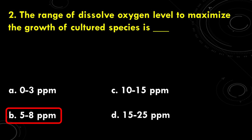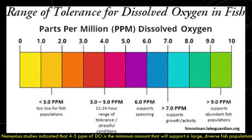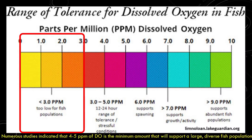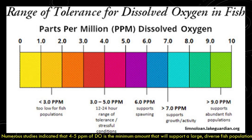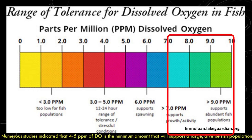This graph shows the range of dissolved oxygen tolerance in fish. DO level less than 3 parts per million cannot support fish populations. DO level between 3 and 5 parts per million can be tolerated by fish for 12 to 24 hours, and beyond can be stressful for the fish. DO level of 6 parts per million can support spawning, while more than 7 parts per million can support sufficient growth or activity. DO level of more than 9 parts per million can support abundant fish populations.